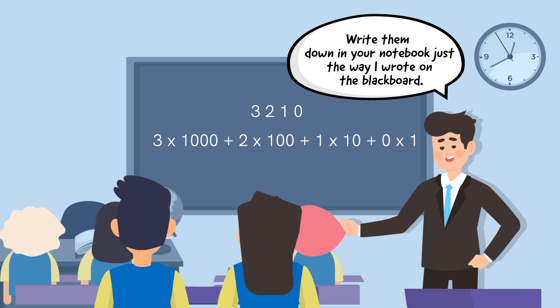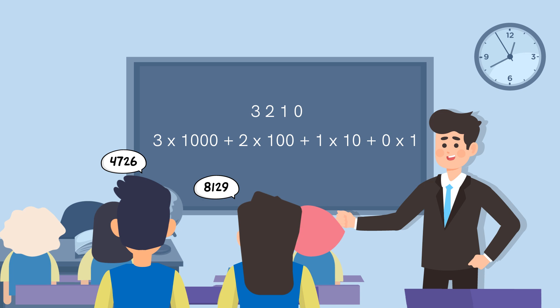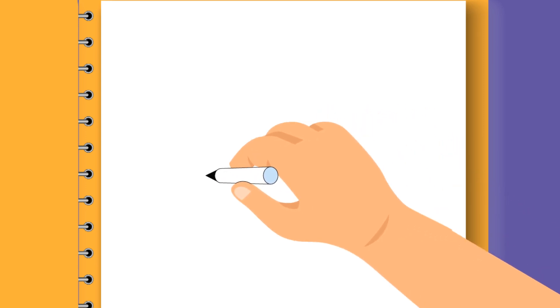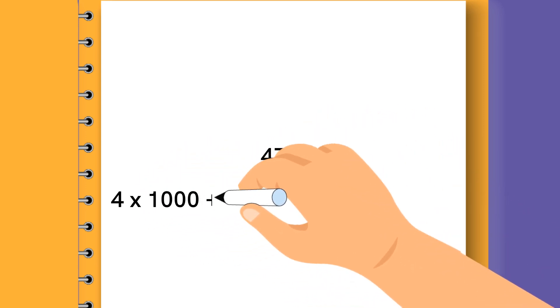Other examples: 5281, 4444, 6000. Give the students some time to find the place values of these numbers.